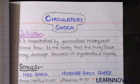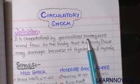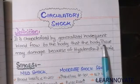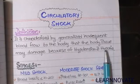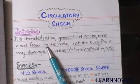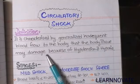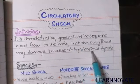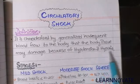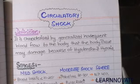So what is circulatory shock? It is characterized by generalized inadequate blood flow to the body, such that body tissues become damaged due to hypotension and hypoxia. It is a condition in which blood flow is so much decreased that tissues experience hypotension — decreased blood pressure — and hypoxia due to decreased oxygen capacity or decreased ventilation-perfusion ratio.